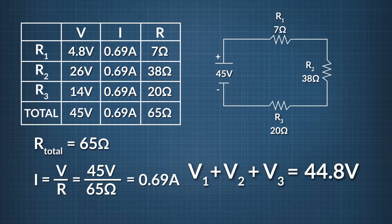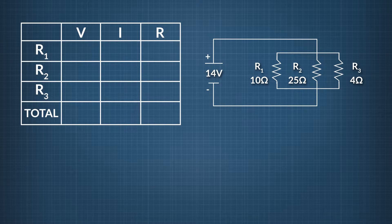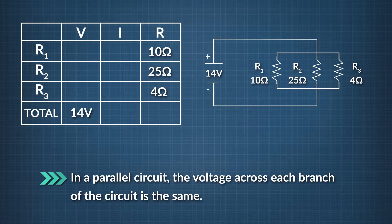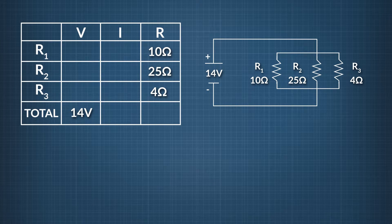That's how to solve a series circuit using a VIR chart. Now let's try the same method with a circuit built in parallel. Just like before, our first step is to fill in all the blanks we can based on the circuit information given. Unlike the series circuit, here we have a couple of options. Remember that in a parallel circuit, the voltage across each branch is the same. Since all three resistors are wired in parallel, the voltage across each one equals the battery voltage — so we fill in all the blanks in the V column with 14 volts.